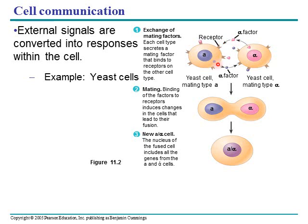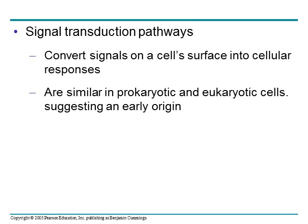Once the alpha factor binds to the A cell and the A factor binds to the alpha cell, it induces them to mate and merge together — their cytoplasms and cell walls match up, and then their nuclei fuse. Once the nuclei have fused, we create an organism with a combination of both DNAs. This is called a signal transduction pathway. A signal transduction pathway converts a signal on the cell's surface into a response within the cell, and this kind of pathway is similar in both prokaryotic and eukaryotic cells, indicating it evolved very early in evolutionary history.